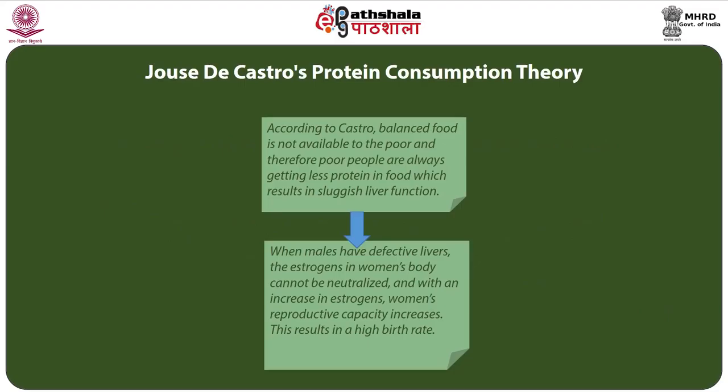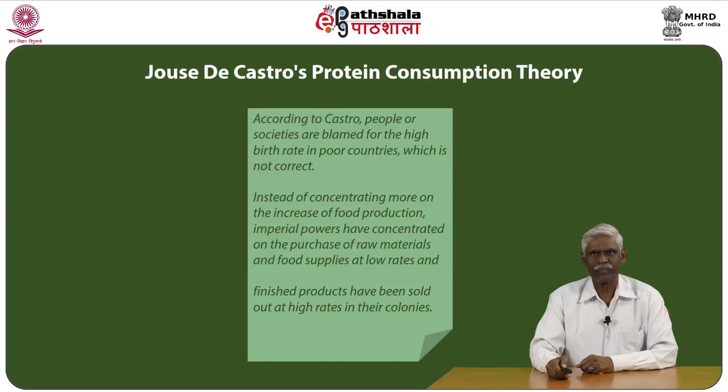According to Castro, balanced food is not available to the poor, and therefore poor people always receive less protein, which results in sluggish liver function. Consequently, when males have defective livers, the estrogens in a woman's body cannot be neutralized. With an increase in estrogens, a woman's reproductive capacity increases, resulting in a high birth rate.